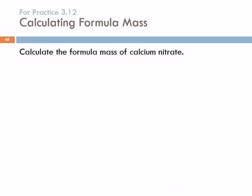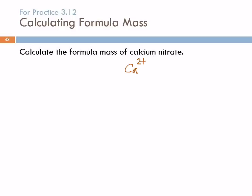So let's calculate the formula mass of calcium nitrate. They didn't give us the formula — they're going to make us write the formula. What kind of a compound is calcium nitrate? Ionic. It is type one. So for an ionic compound, to get the formula we need to look at the formula with charge for calcium and the formula with charge for nitrate. Calcium is Ca²⁺ because it's in group 2. Nitrate is NO₃⁻.